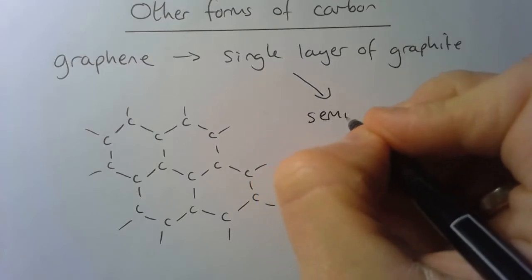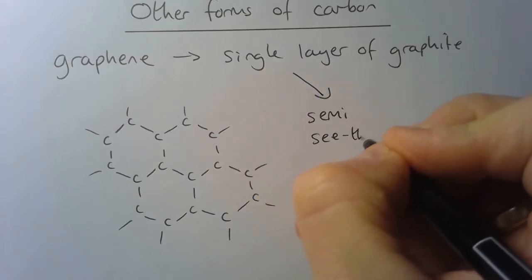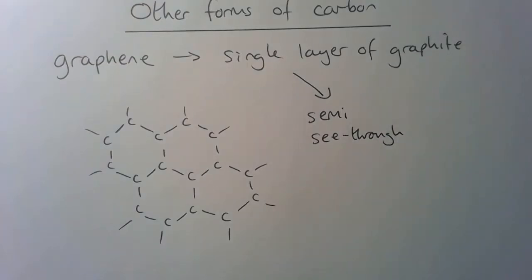So graphene is semi-C3, or semi-transparent, so light can get through it. And that's going to be very important for future uses of it.